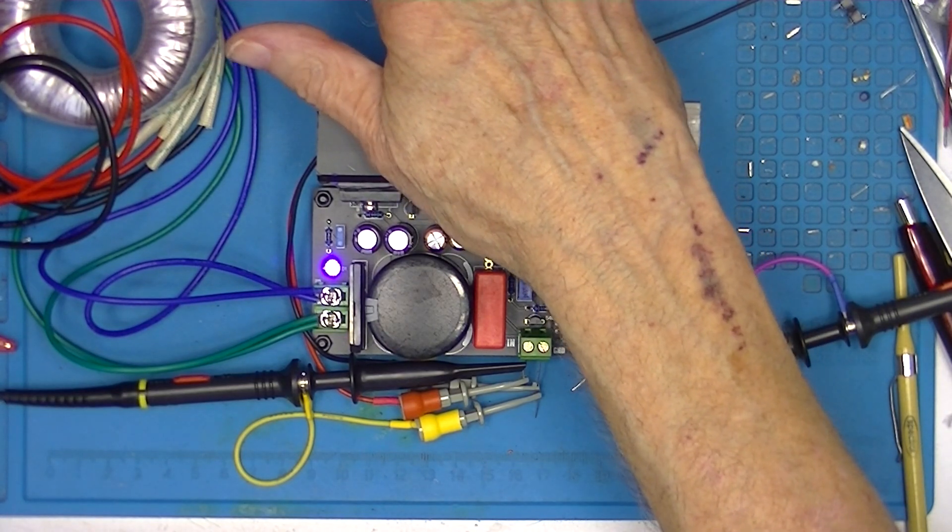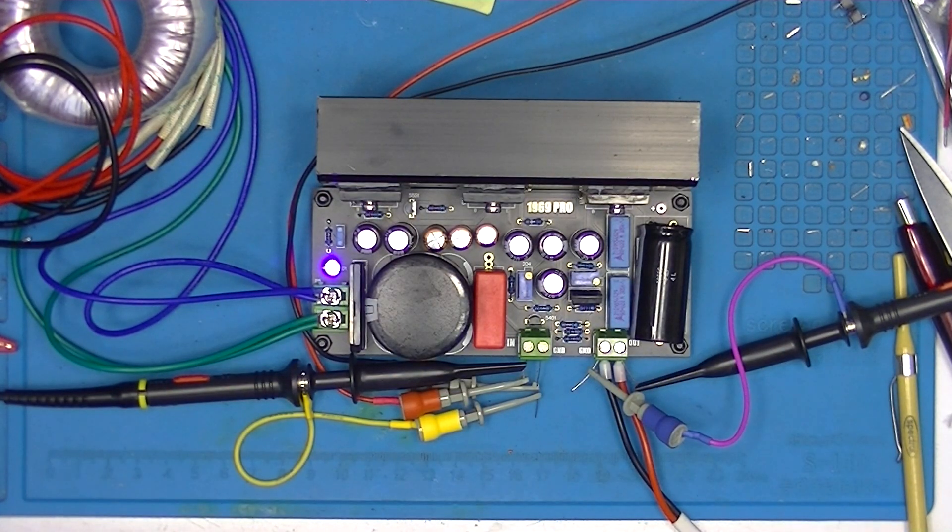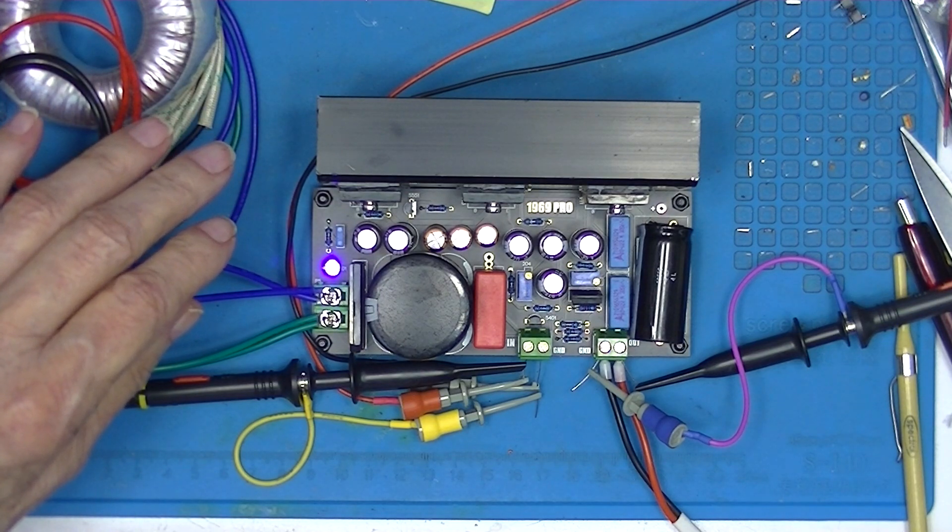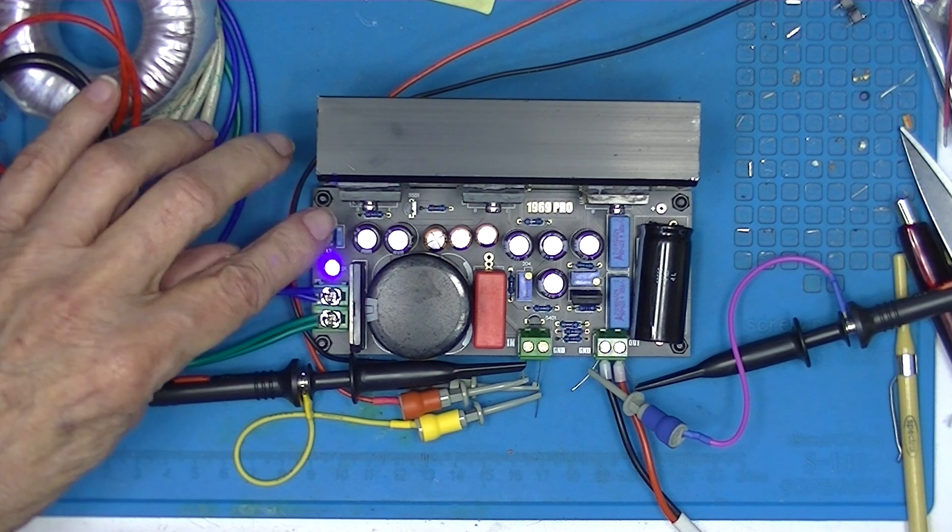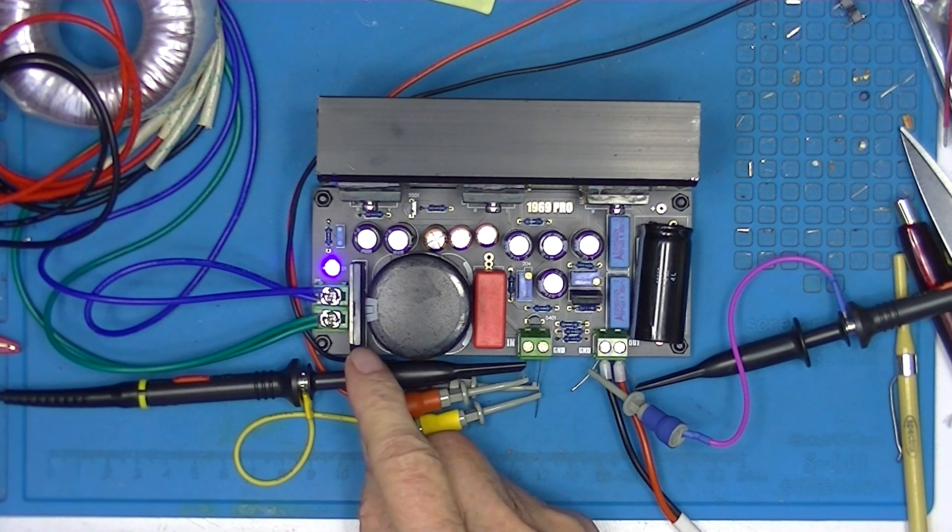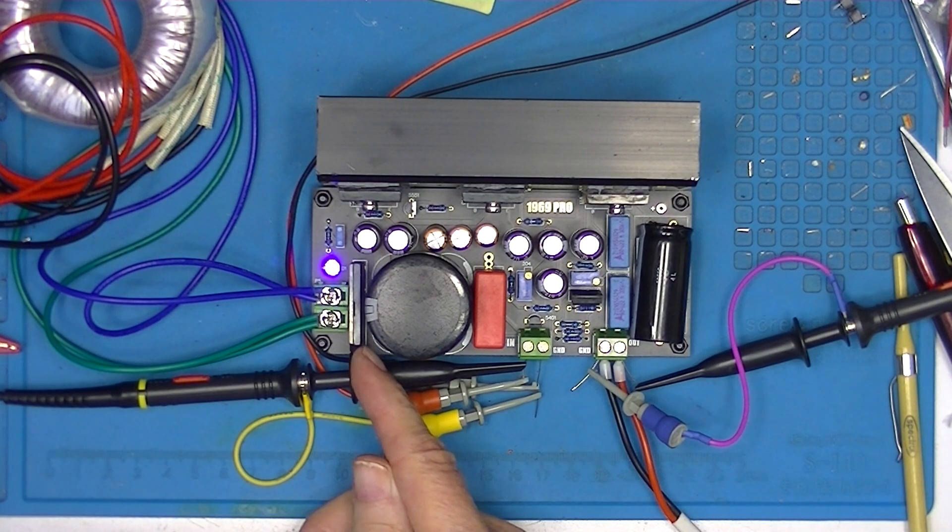It's fairly hot. Transistor bodies are 36 degrees C. Actually, down here at this one, we're looking at 35 degrees C. This rectifier is at 33 degrees C. Back here, 36 degrees C.